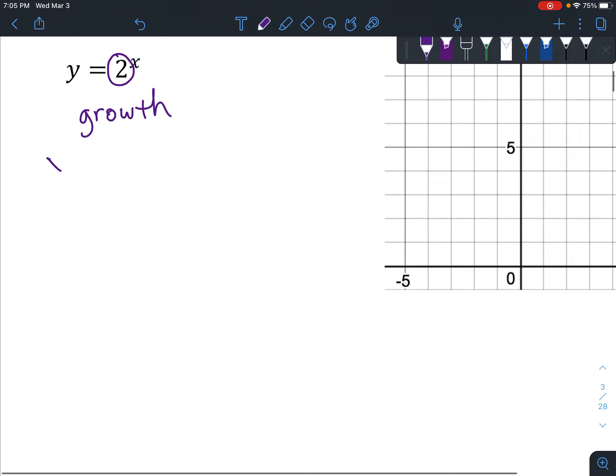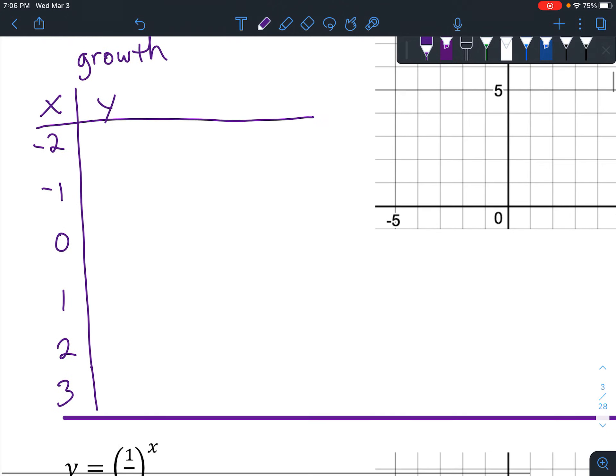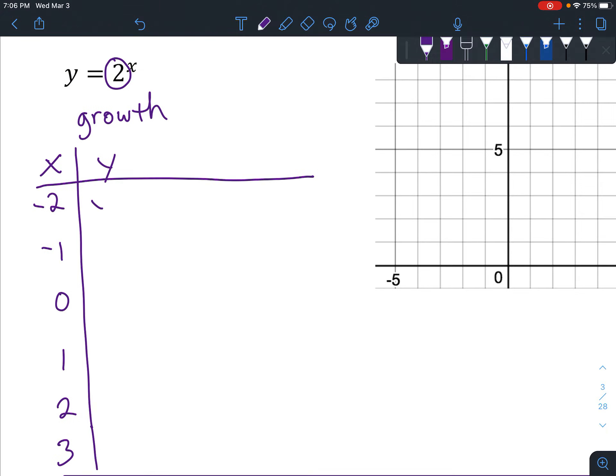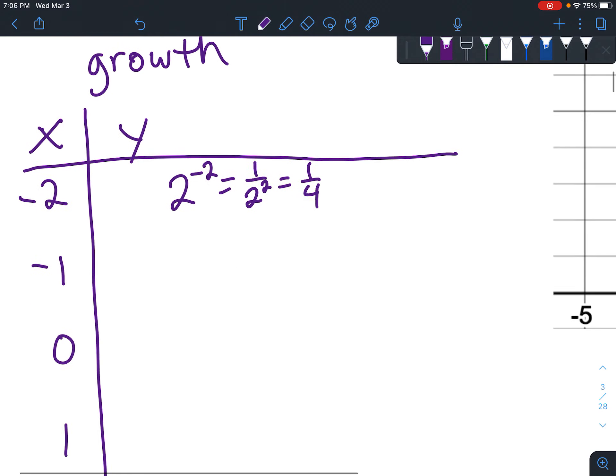Now let's just go ahead and draw a little x, y chart to get a general idea of what this looks like. And we're going to start with some negative numbers. How about negative 2, negative 1, 0, 1, 2. And I think we have room to even do 3. Okay, and we're going to plug it into this formula. So y equals 2 to the x. So we're going to say 2 to the negative 2, which is the same as 1 over 2 squared, which is the same as 1 over 4.